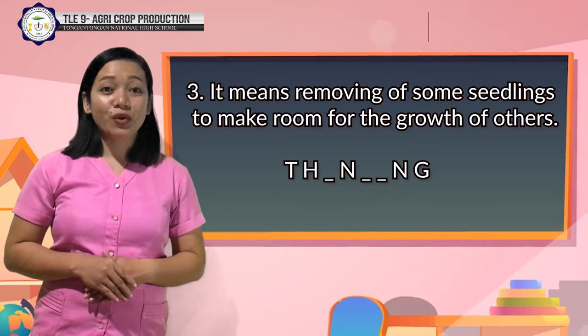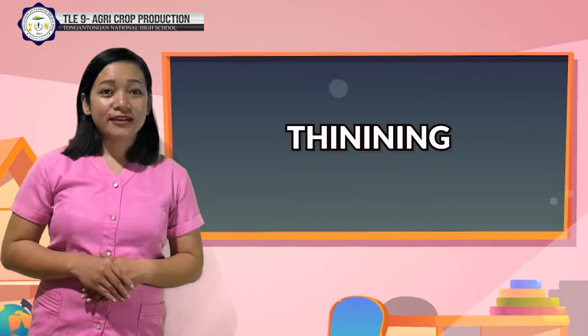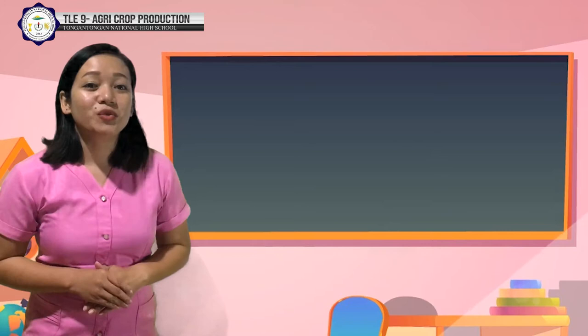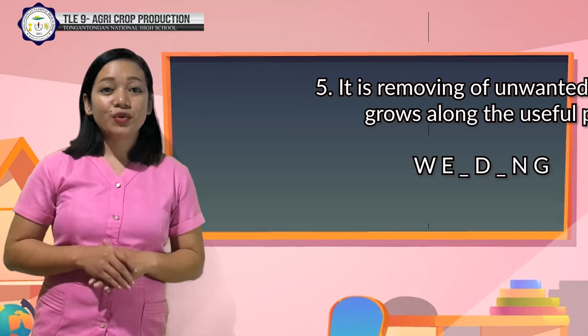Number 4: this is done by transferring individual seedlings into their own crop or pack. This is what we call pricking out. And the last one: it is the removing of unwanted plants that grow along with the useful plants — that is Weeding.